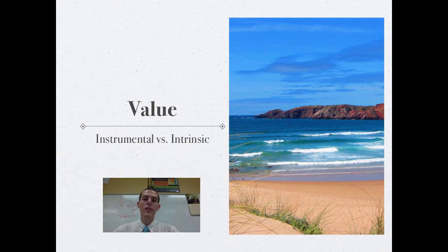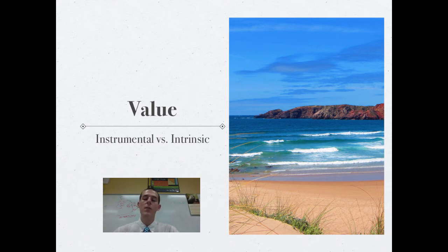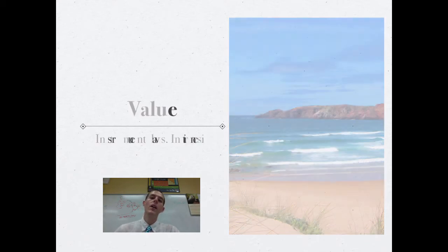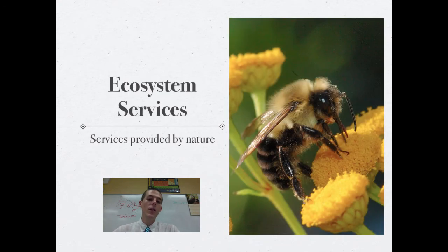Instrumental value says that things have value as tools or instruments that we can use. Intrinsic value says that we should protect resources just because it is the morally correct thing to do. For the rest of the video today, we're going to talk about ecosystem services.